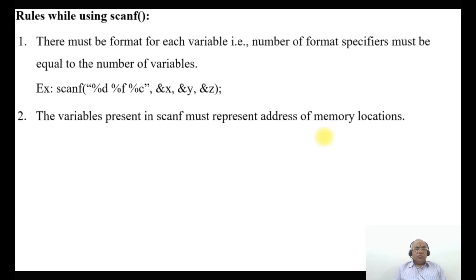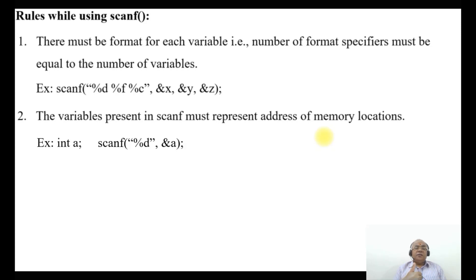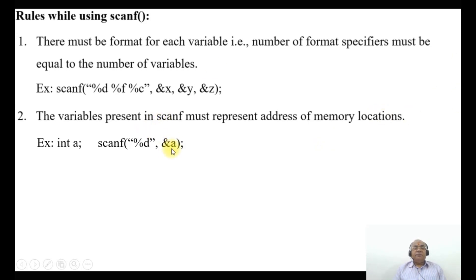Rule 2: the variables present in scanf must represent addresses of memory locations. For example, if you declare int a, then the scanf statement should be scanf("%d", &a), where &a represents the address of variable a.